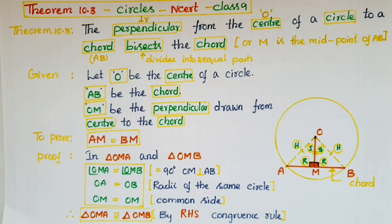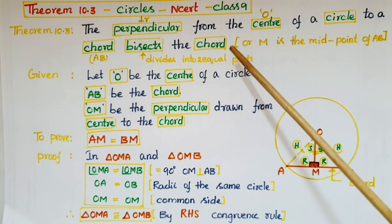Hello everyone, today I am going to tell the proof of Theorem 10.3 from the Circles chapter from NCERT Class 9. In this theorem, the perpendicular from the center of a circle to a chord bisects the chord.